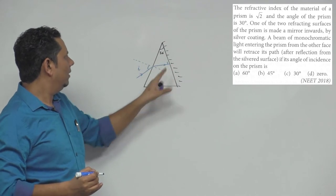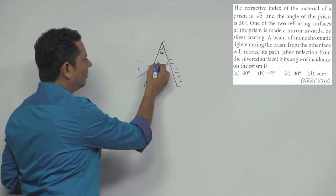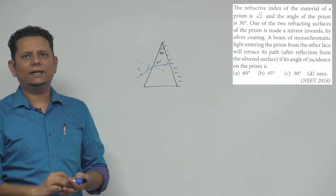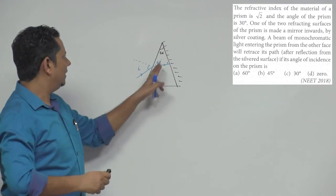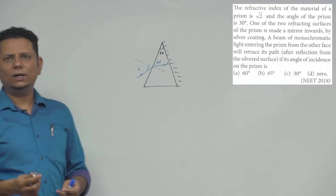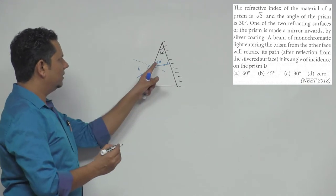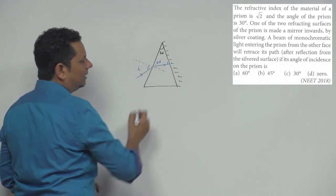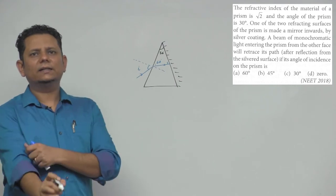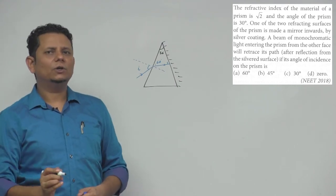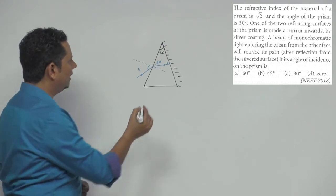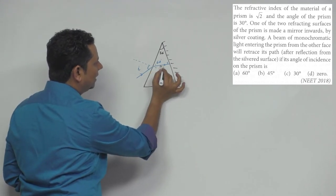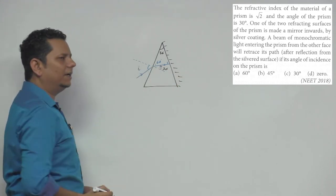...then looking at this triangle, this angle becomes 60 degrees. Here you just need to apply plane geometry. So if this angle is 60 degrees, then the angle of reflection — note this carefully, people make a mistake here — the angle of reflection is NOT 60 degrees, because angle of reflection is always measured from the normal. So angle of reflection becomes 30 degrees.